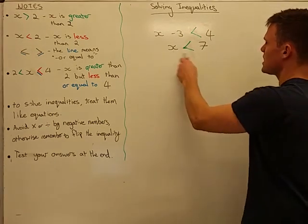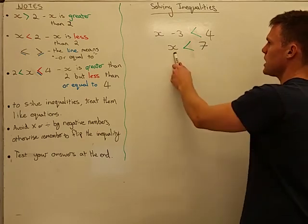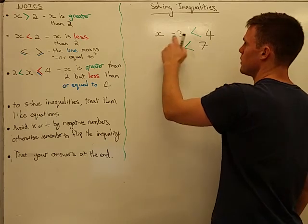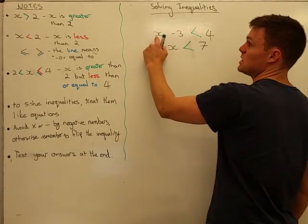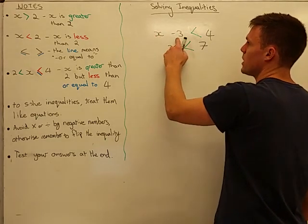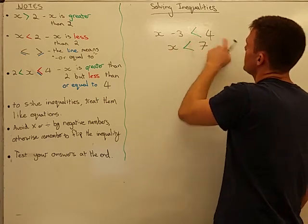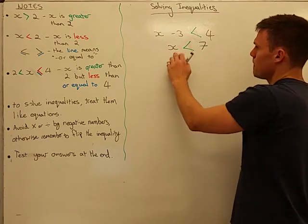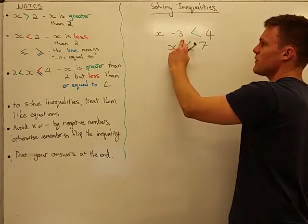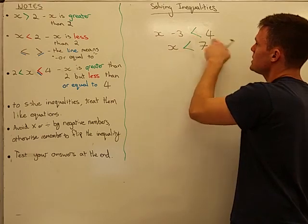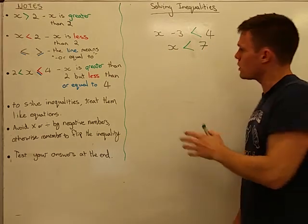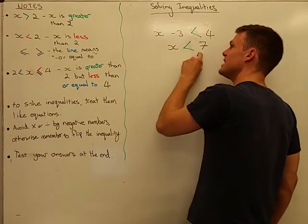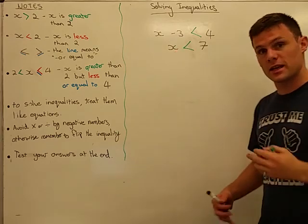If I just check this — well, x is less than 7, so let's pick a number that's less than 7: 0. 0 take away 3 is negative 3, and negative 3 is definitely less than 4. If we pick a number that's bigger than 7, let's say 10 — 10 take away 3 is 7, and 7 is not less than 4, so it doesn't work. This inequality is solved by any number less than 7 for x.